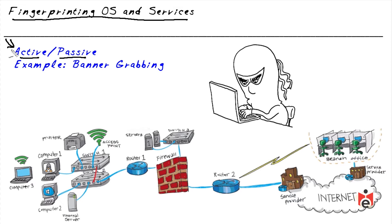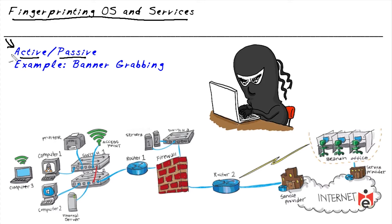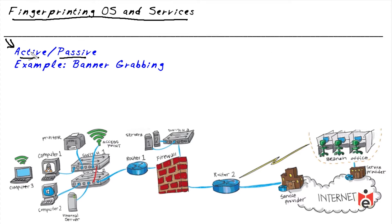Active fingerprinting can include normal three-way handshakes to see the responses, or specially crafted packets using hacking tools. Even subtle nuances in how a specific system's protocol stack responds can help identify or narrow down the type of operating system or platform that host is running.